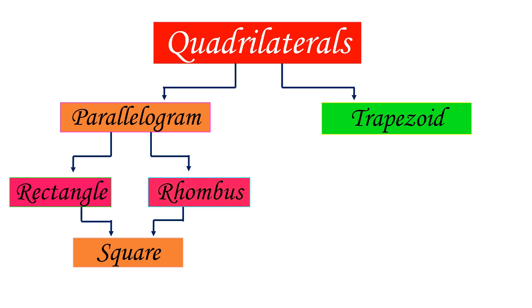Rectangle and rhombus could be a square. A square is a special kind of rectangle, but not all rectangles are squares. These are the relationships between one quadrilateral to another quadrilateral.